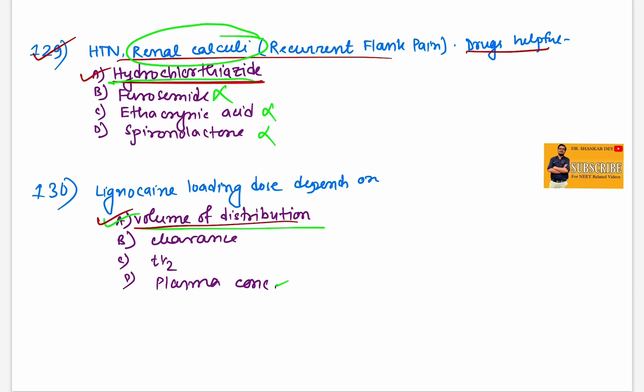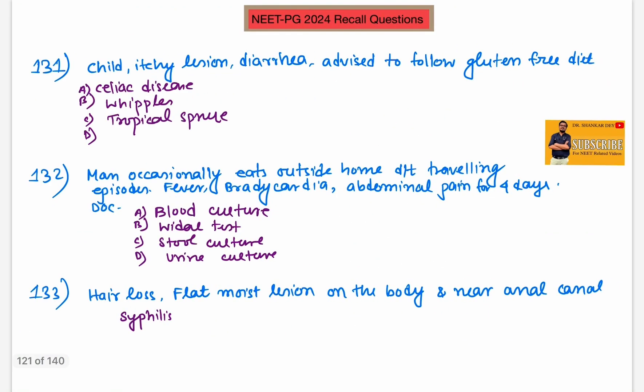Question 131: Child with itchy lesions, diarrhea, advised to follow gluten-free diet. This gluten sensitivity, itchy lesion maybe dermatitis herpetiformis, diarrhea malabsorption is suggestive of celiac disease. Straightforward clinical scenario-based question, celiac disease.